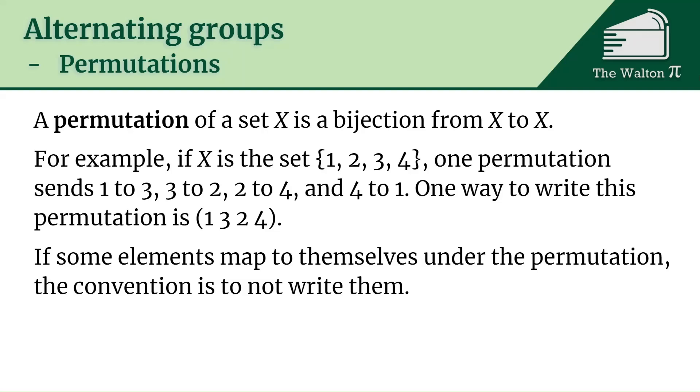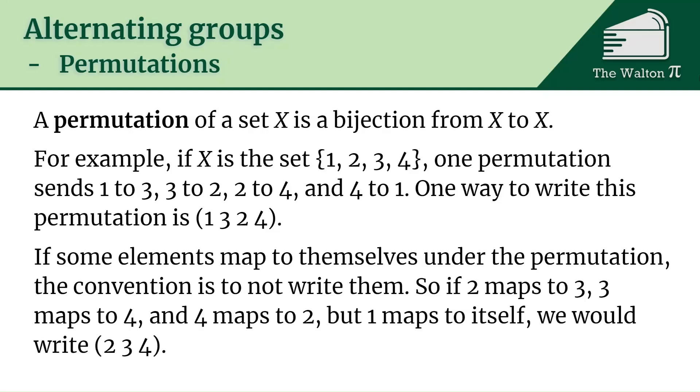If some elements map to themselves under the permutation, the convention is to not write them. So if 2 maps to 3, 3 maps to 4, 4 maps to 2, but 1 maps to itself, we would just write (2 3 4). 1 goes to itself so we don't bother writing it.